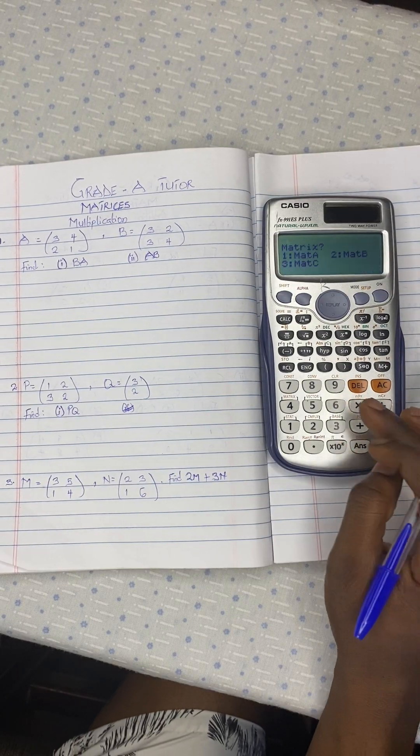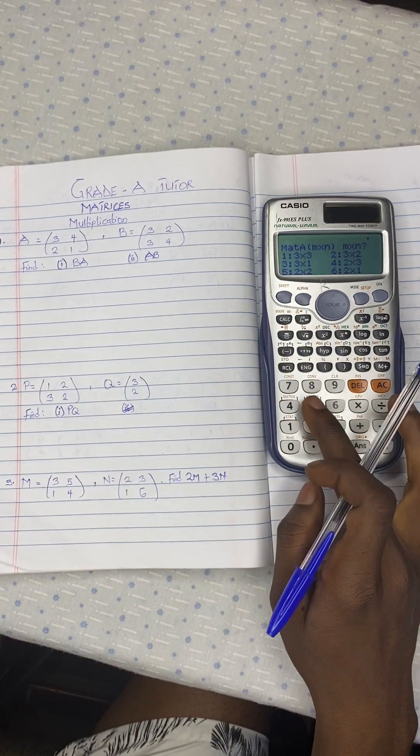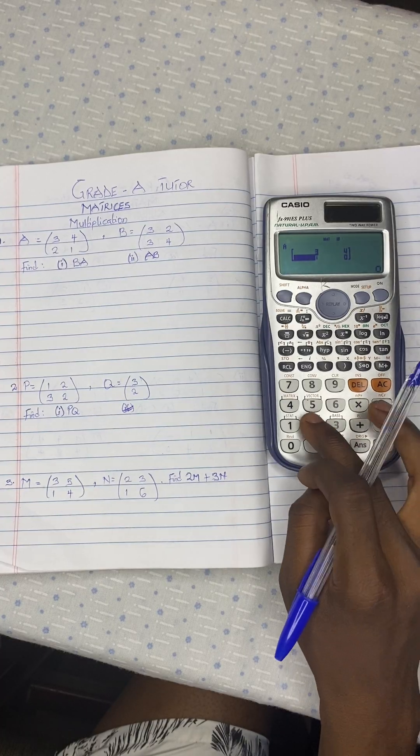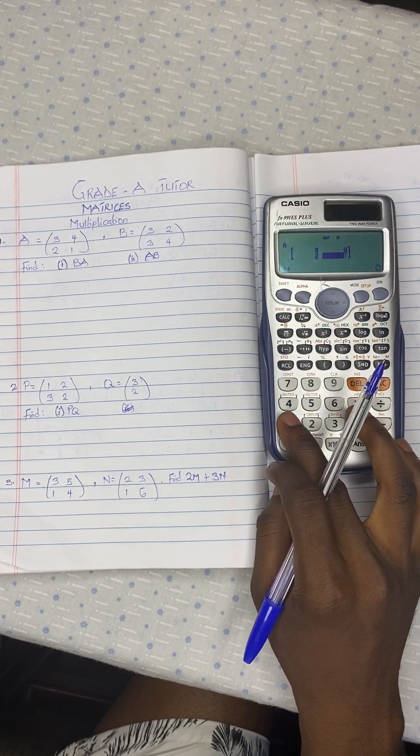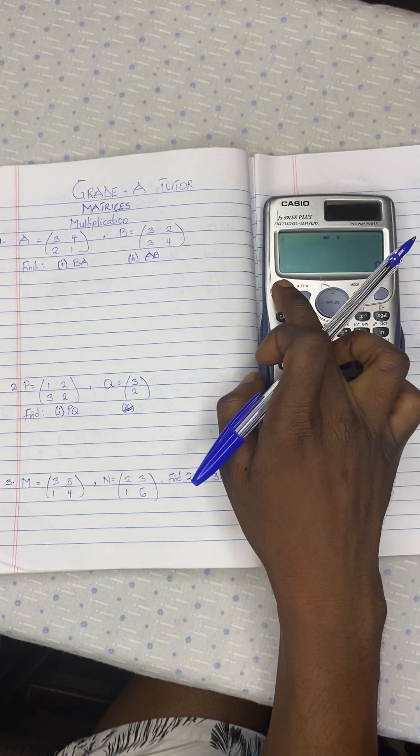You press on mode, option 6, now option 1, 2x2, so option 5. Then you say 3, 4, 2, 1. Then you press here to save it, shift 4.